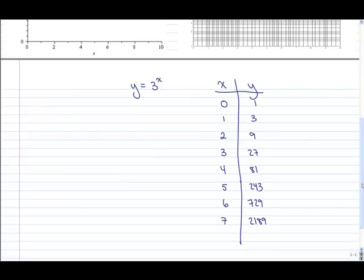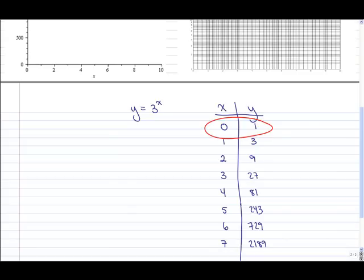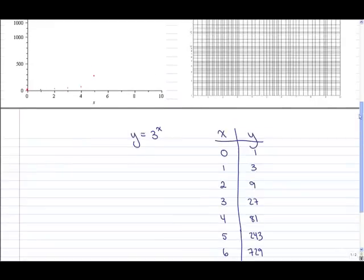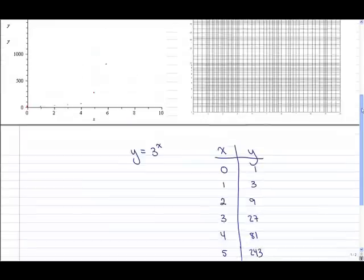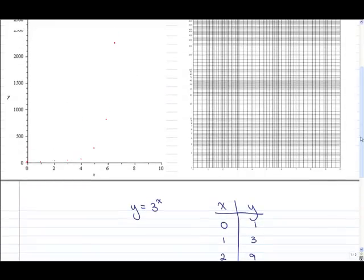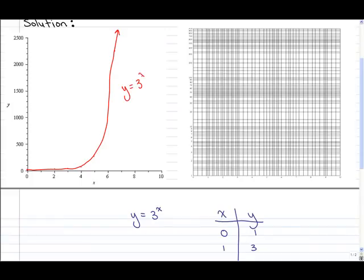Let's try plotting this on the ordinary axis. When x is 0, y is equal to 1 — roughly over here. When x is 1, y is equal to 3, just slightly larger. When x is 2, y is equal to 9, gradually getting larger. When x is 3, y is 27. When x is 4, y is 81. When x is 5, y is 243, starting to get a little bit larger. When x is 6, y is 729. When x is 7, y is equal to 2,187. So we get a rough idea of what's happening — there's the plot of y equals 3 to the x on the ordinary axis.